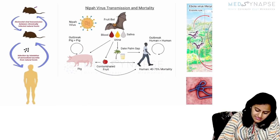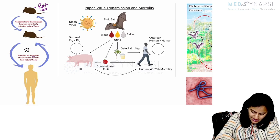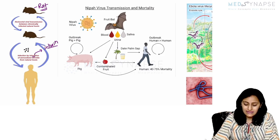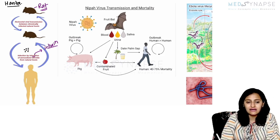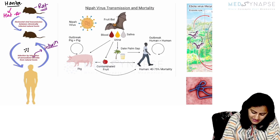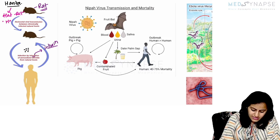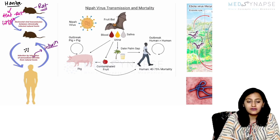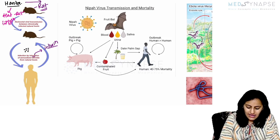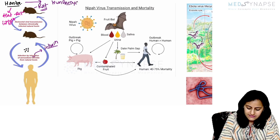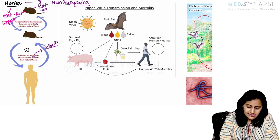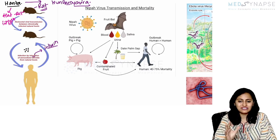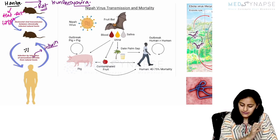First, when you see a rodent (rat) and inhalation shown in the image, remember this is Hanta virus. For Hanta: 'hat' is rat, 'ha' is inhalation. 'Han' is 'bun' — so remember this is a Bunyavirus (Bunyaviridae), which has a segmented genome. So whenever you see rodent/rat with inhalation, that is Hanta virus.